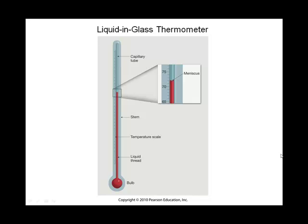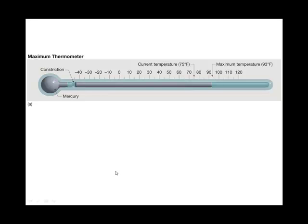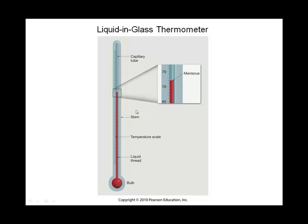So this is the liquid in a glass thermometer, where down here you have either alcohol or mercury and as it heats up, then the liquid will expand and it will go up that stem. Come back here, it will go up that stem and notice here you read the temperature.